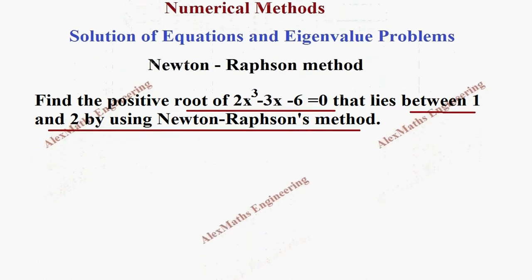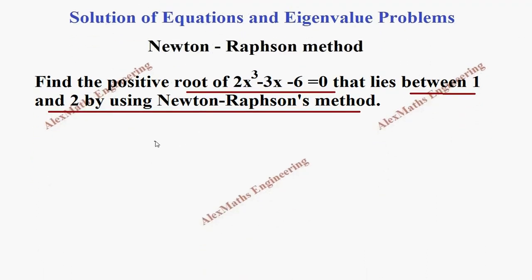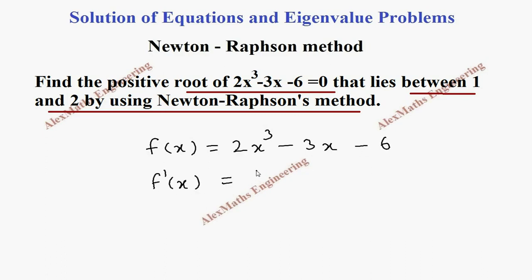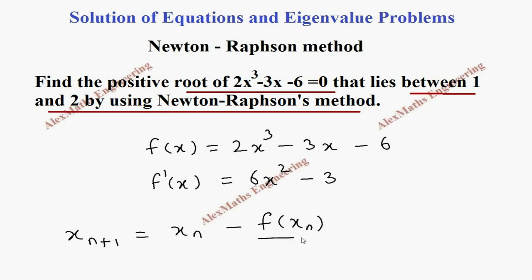Now we take f(x) which is equal to 2x cubed minus 3x minus 6. Now let's find its derivative f'(x) which is 6x squared minus 3. According to Newton-Raphson's formula, x_(n+1) is x_n minus f(x_n) divided by f'(x_n).